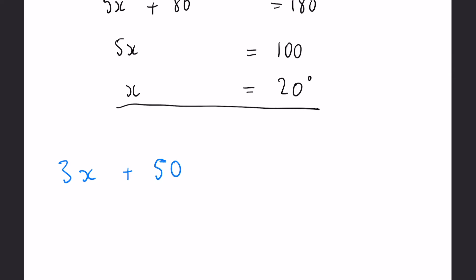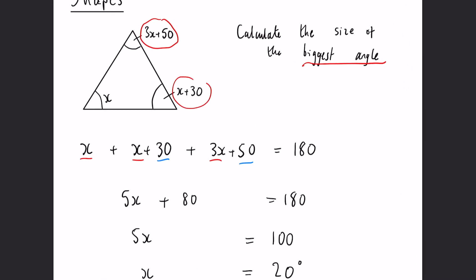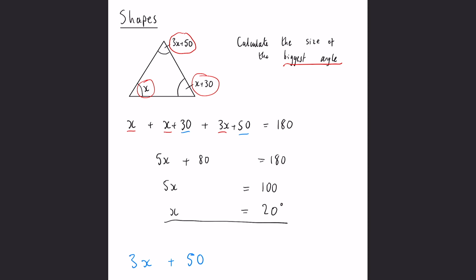So if we take our x and substitute it into 3x plus 50. Again, using the substitution rules that we've learned in a previous video. 3 bracket 20 plus 50. 3 times 20 gives us 60 plus 50, 110 degrees. And again, something for you to do in your own time. Substitute the x into this angle and this angle as well. Add them up and they should equal 180. This is a good thing to do in an exam because it's reversible so you can always check it. Apart from that, thank you for watching and I hope that helped.